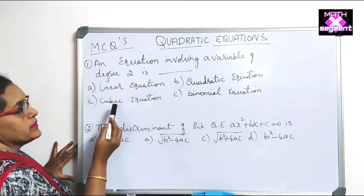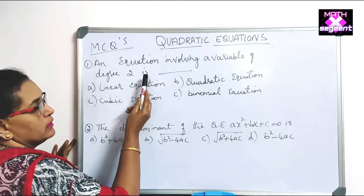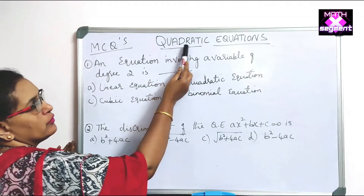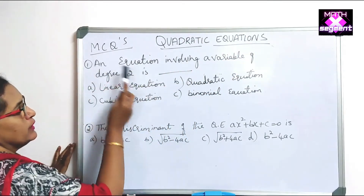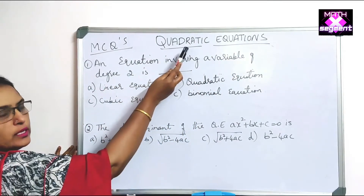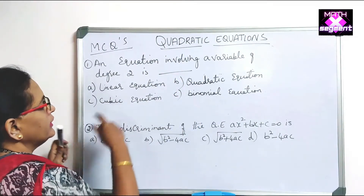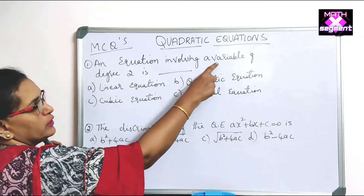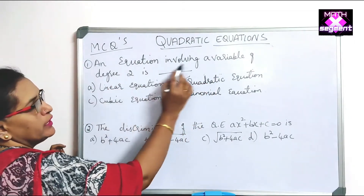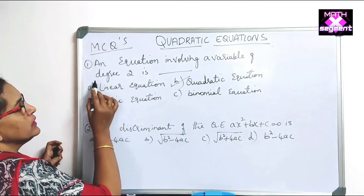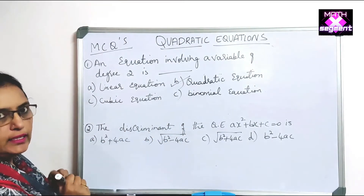MCQ: An equation involving a variable of degree 2 is — ? This question is based on the definition of a quadratic equation. The correct answer is 'quadratic equation,' because any equation involving a variable with degree 2 is called a quadratic equation.